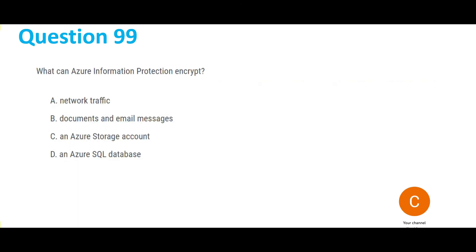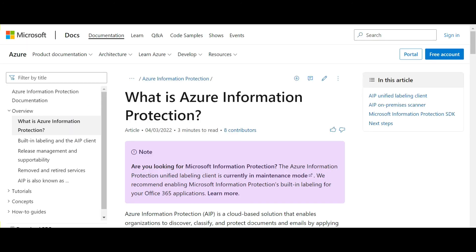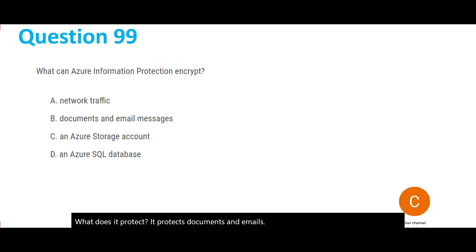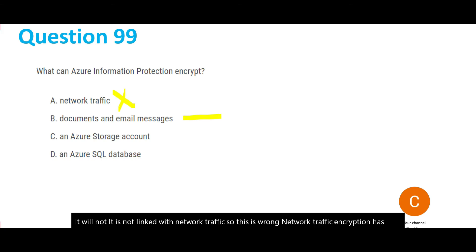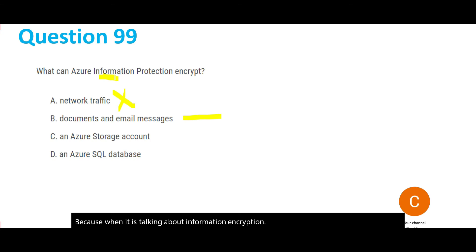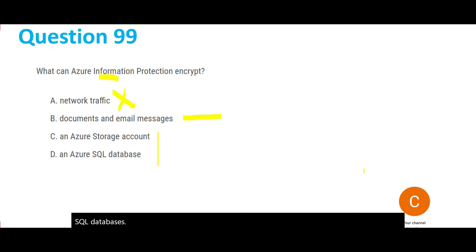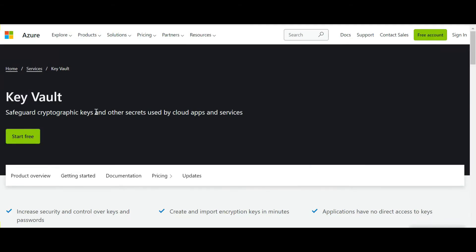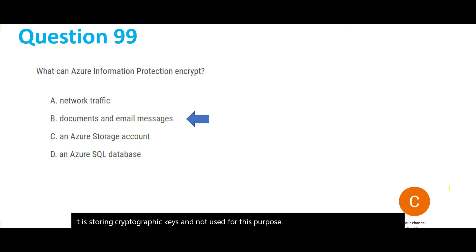Azure Information Protection protects documents and emails. It is not linked with network traffic, and encryption for storage accounts and SQL databases is usually handled through Key Vault — which stores cryptographic keys. So Information Protection is not used for this purpose. This is the final answer, let's move forward.